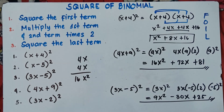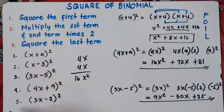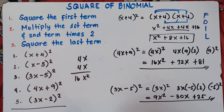That's it class — that's how you do the square binomial. You try to answer number 5 and put your answer in the comment section down below so we can check if you really understand the topic. To summarize: square the first term, multiply the first and second term times 2, then square the last term. If you learned something new today, don't forget to like, share, and subscribe — share it with your classmates so we can help more students. Once again, this is Teacher MJ. Bye-bye!